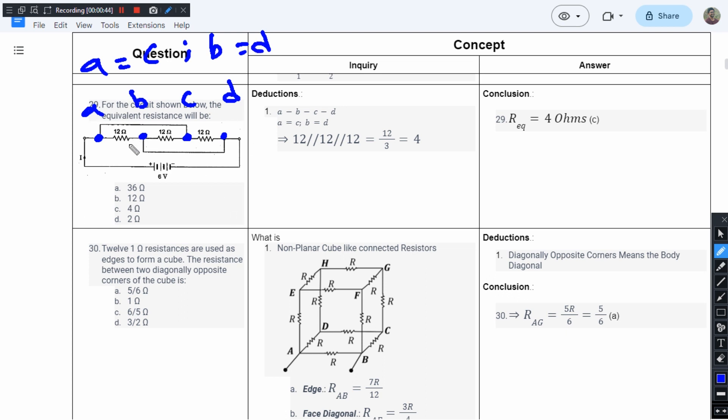By this logic we can rearrange this circuit. Since A and C are equal, I'm going to take just A. Since B and D are equal, I'm going to take B here. Between A and B we have 12 ohms, another 12 ohms, and another 12 ohms.